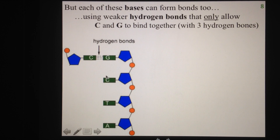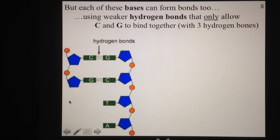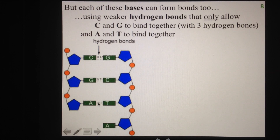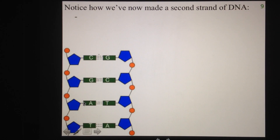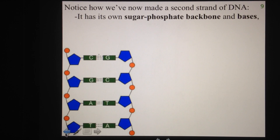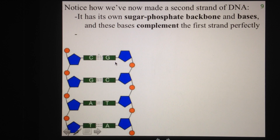Since there is a cytosine here, we're going to have a guanine bond with it using three hydrogen bonds. With the right enzymes around, we can also start forming a sugar phosphate backbone. The next letter is a T, so that can only bond with an A, with two specific hydrogen bonds — there's a hydrogen bonding arrangement that makes it so only A and T can join together. So we've now made a second strand of DNA, which also has its own sugar phosphate backbone and its own bases that perfectly complement the original strand.